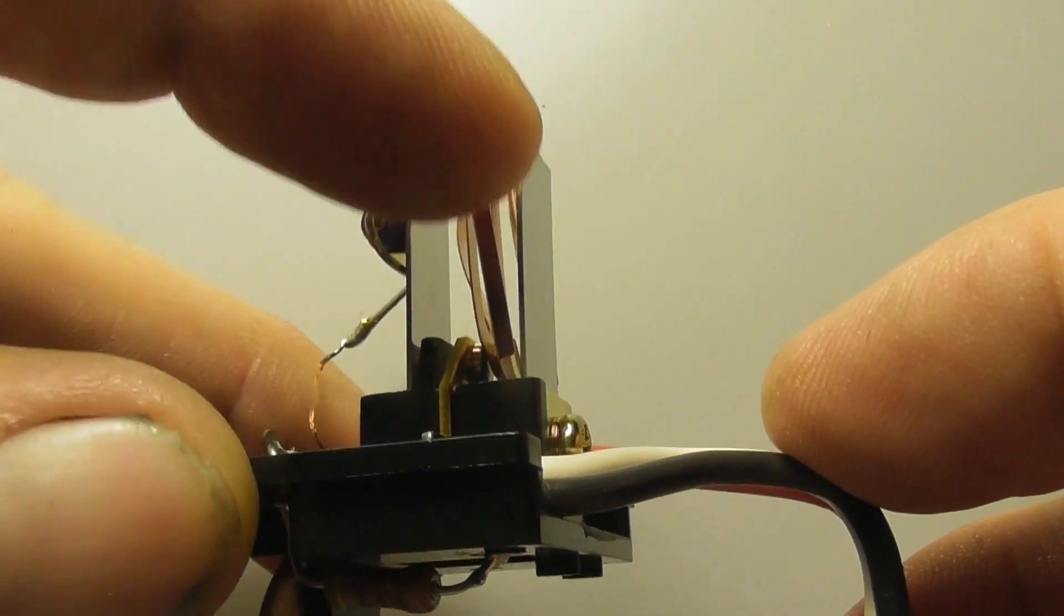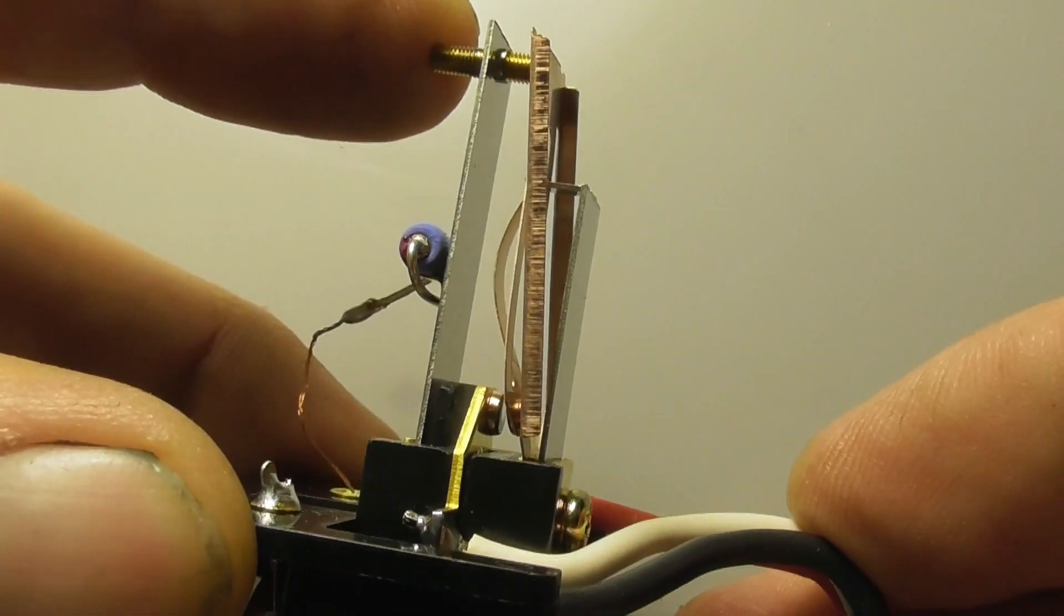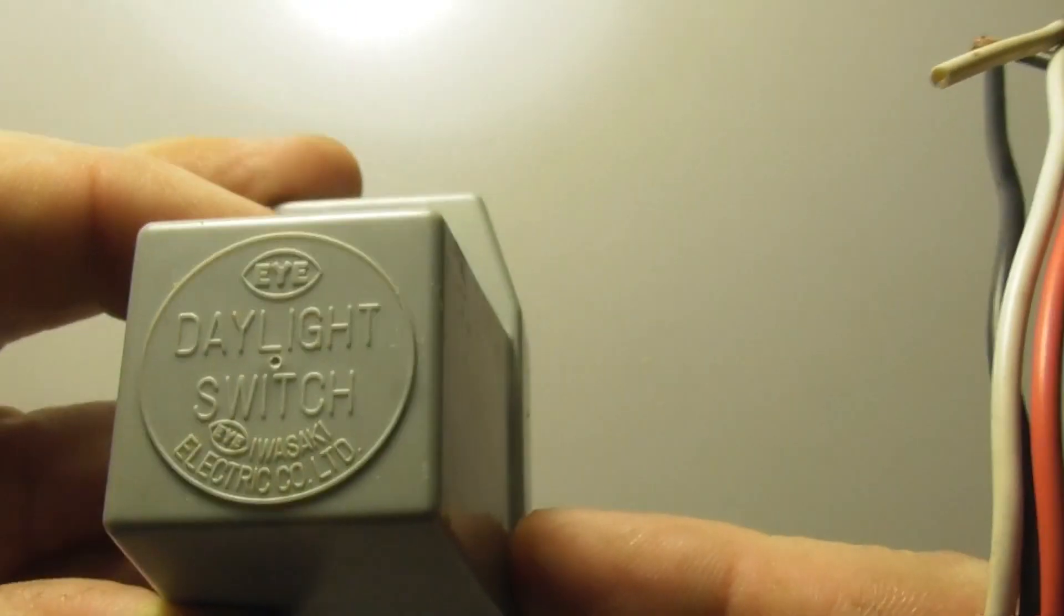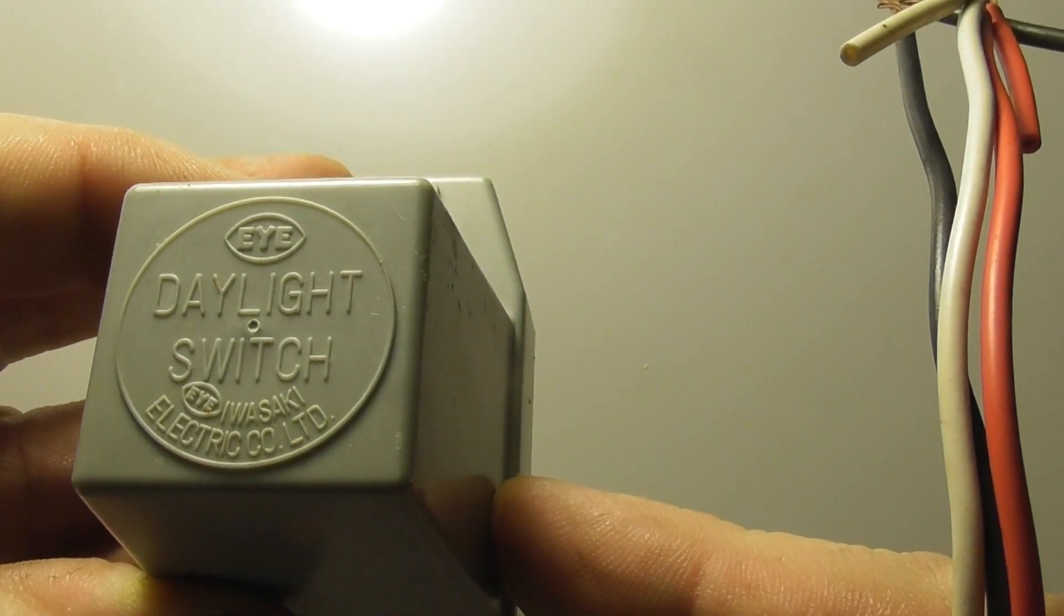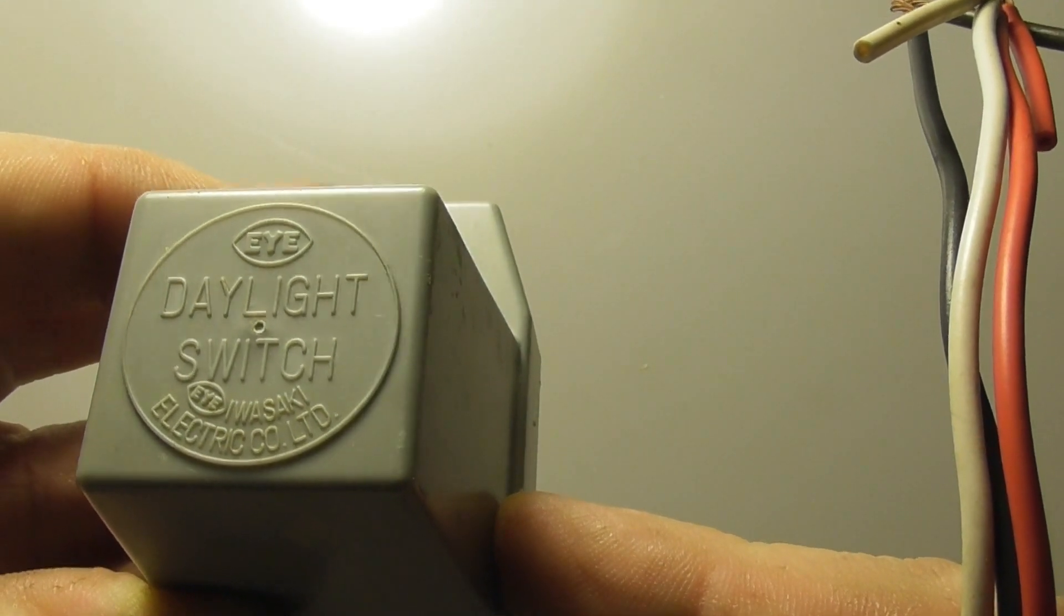The white wire here is the switching wire, so the electrons flow back to the metal part and then the contact will toggle and the lights are switched on. This is the Eye daylight switch, made in Japan, a proper Japanese one.